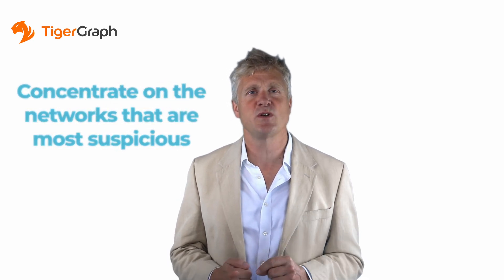Using TigerGraph, banks can detect suspicious behavior both when criminals create accounts and in real-time when fraudulent transactions are taking place, and can investigate cases using graph algorithms to filter out irrelevant noise so they concentrate on the networks that are most suspicious. This not only reduces financial losses, but improves customer satisfaction because fewer legitimate transactions are mislabeled as suspicious and stopped.